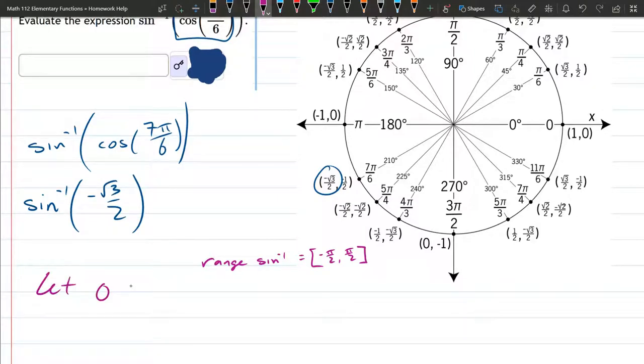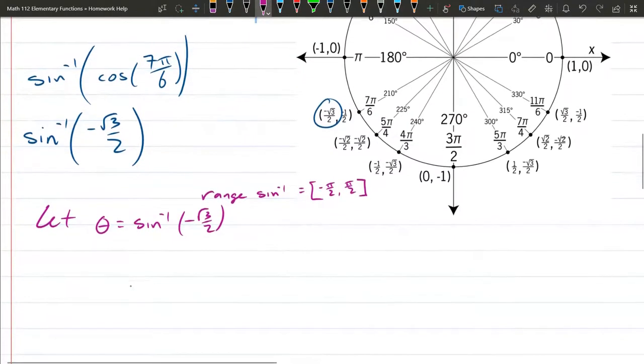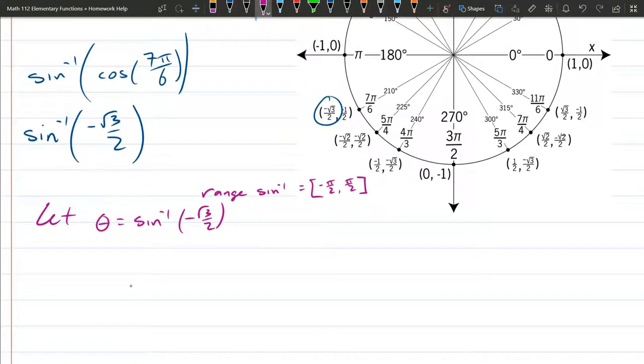We've done this many times before. I'm going to let θ equal sine inverse negative square root 3 over 2. Now if you already know the answer to this, that's fine, you can probably stop the video now. But if you don't, no problem. We're going to move the sine function over, so sine θ equals negative square root 3 over 2.